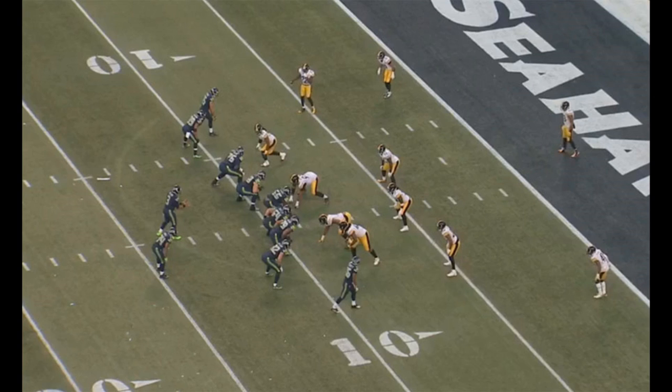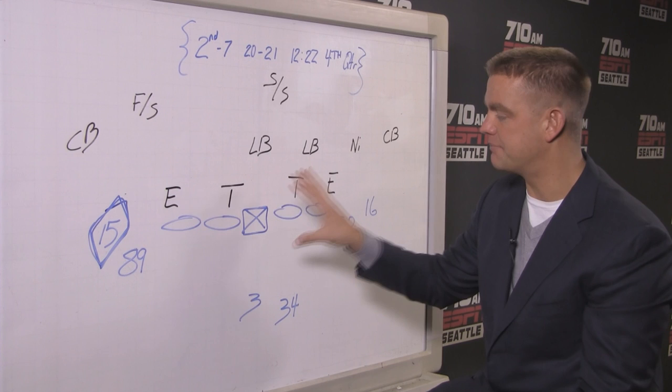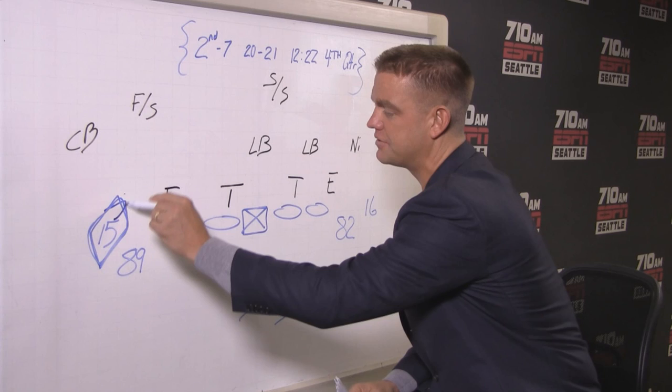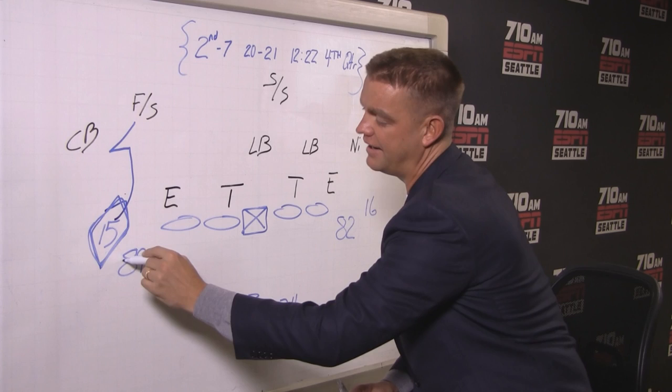What stands out more than anything, and it really did throughout this game with Russell Wilson, the passing game, the protection, was the execution within the play. So this is a double stick nod, same concept on both sides. You call this a mirrored route because on both sides of the field you're going to see the same route combination. You call this a stick route and a nod.